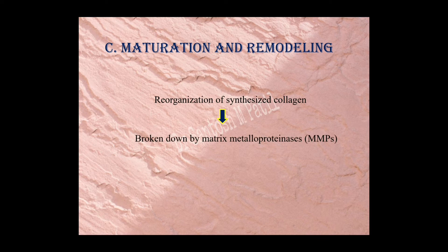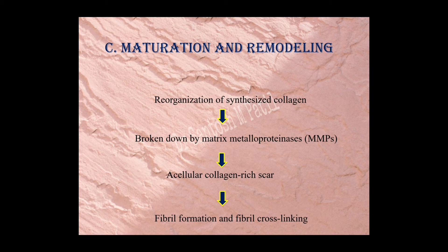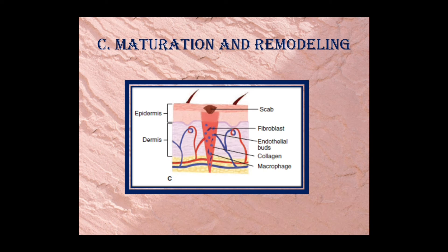This remodeling is mainly by the breakdown of matrix metalloproteinases. The end product is an acellular collagen-rich scar. Then fibril formation and cross-linking start taking place in this collagen, making it strong and decreasing its solubility. The additional advantage is increased resistance to enzymatic degradation, meaning the scar becomes stable. This picture shows the scab formation — the last stage — mainly by fibroblast-induced collagen deposition.